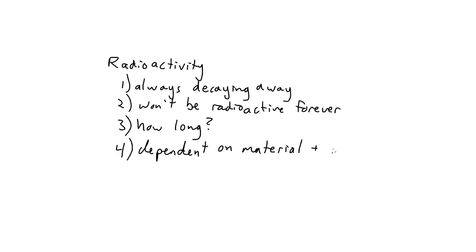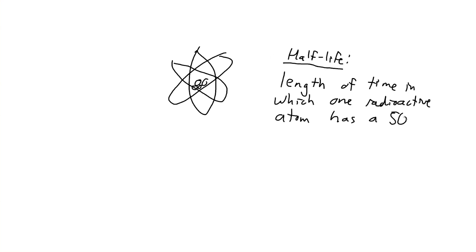So as I've stated before, if we have a sample of radioactive material that's always decaying away, logically it won't stay radioactive forever. So how long does it take to decay away? That depends entirely on the radioactive material in question and what we call its half-life. Let's start with the technical definition. Half-life is the length of time in which one radioactive atom has a 50% chance of decaying. So if you extrapolate this out, this means that half of the radioactive material will decay away after one half-life.